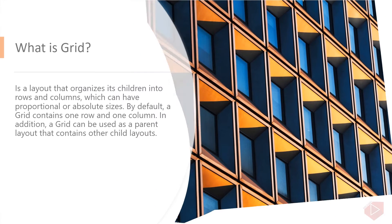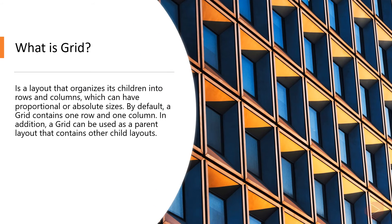What is Grid? The Grid is a layout that organizes its children into rows and columns, which can have proportional or absolute sizes. By default, a grid contains one row and one column. A grid can be used as a parent layout that contains other child layouts. The Grid layout should not be confused with tables and is not intended to present tabular data. Unlike HTML tables, a grid is intended for laying out content. For displaying tabular data, consider using a ListView, CollectionView, or TableView.